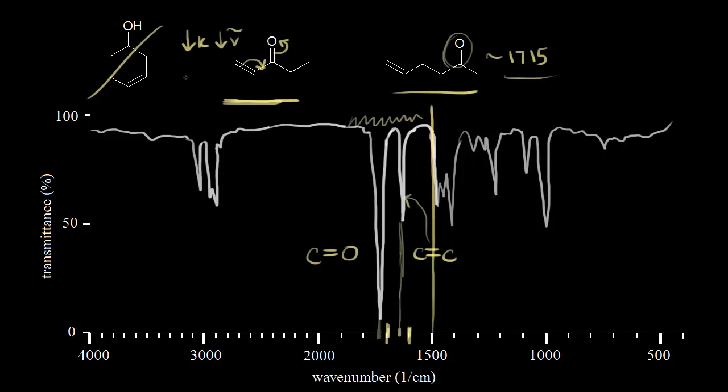Actually, it moves it under 1,700 to somewhere around 1,680 is where we would expect it to be. I don't know exactly where it is, but it's definitely less than 1,700. And this is very clearly, let me go ahead and mark this here. This is very clearly the 1,700 line, and our signal is past that. So this must be talking about the unconjugated ketone over here on the right. And so this spectrum corresponds to this molecule. So hopefully that gives you a little bit of insight into how to approach some simple IR spectra.